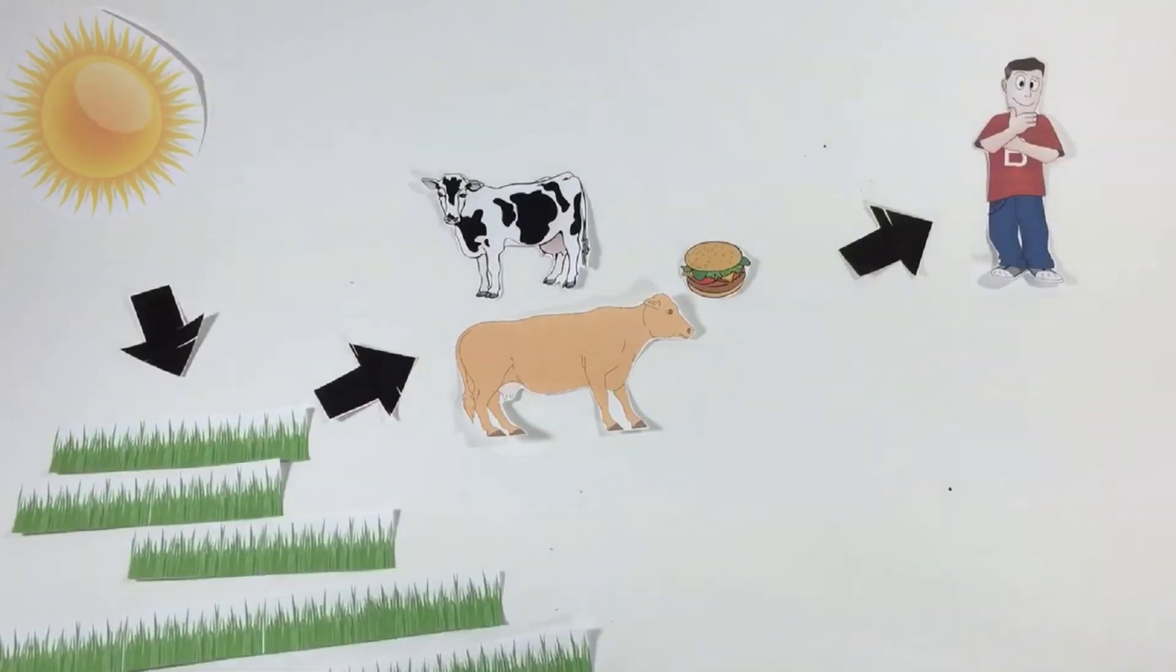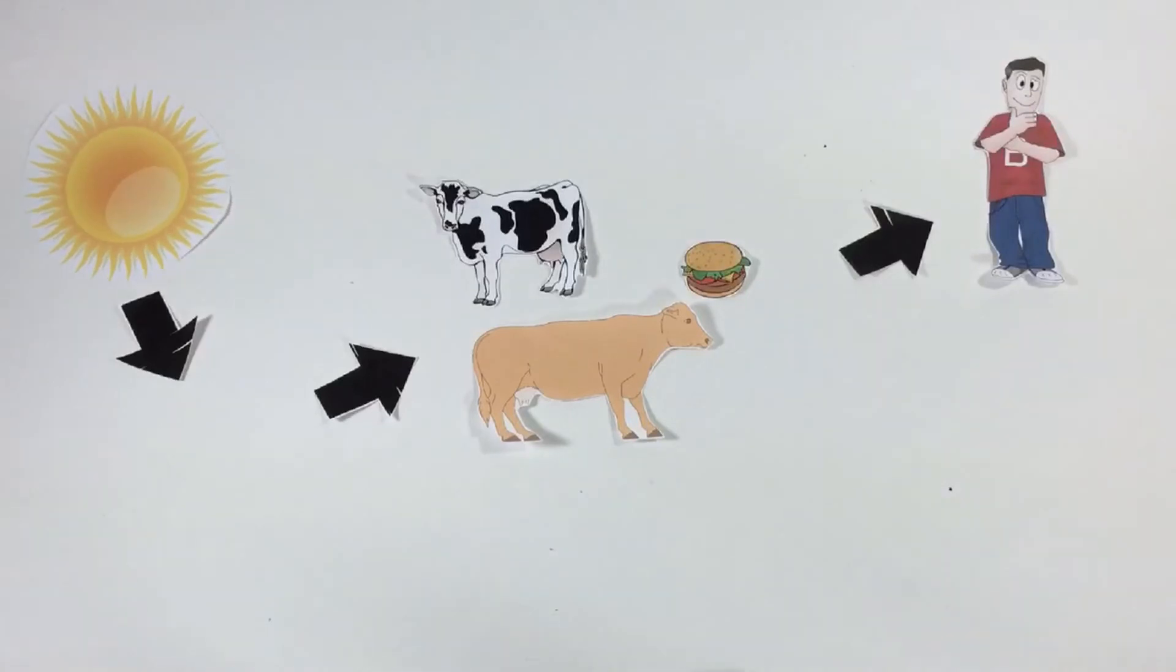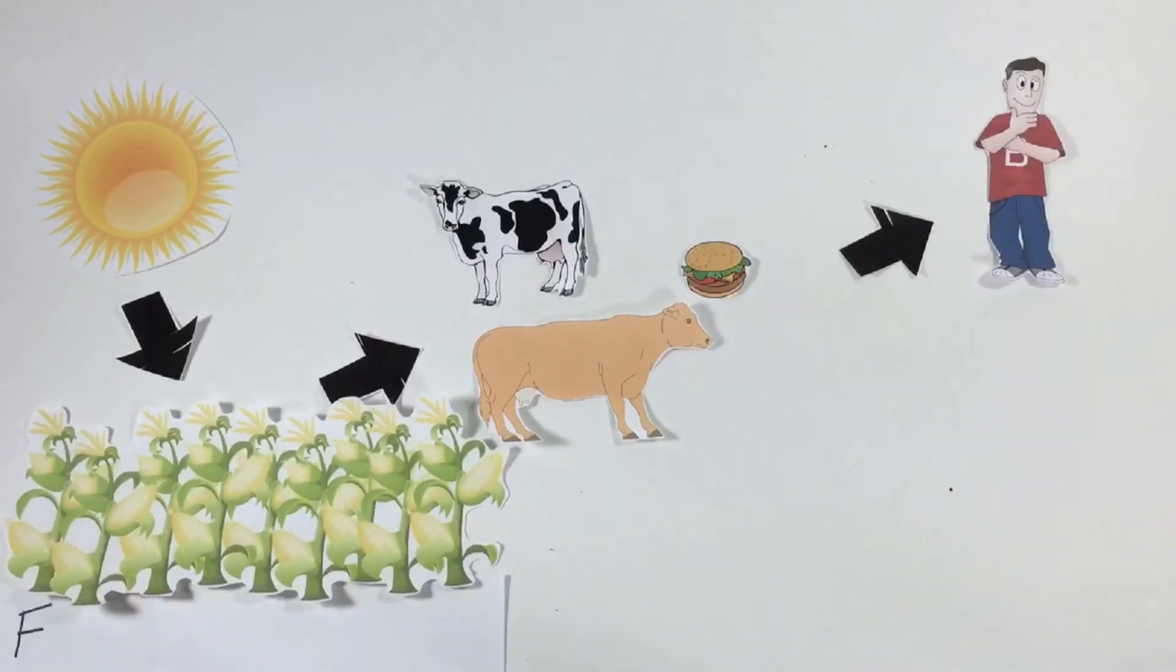Now, to feed 10 billion animals, you need a lot of grass, or in the case of the cow, a lot of corn. In fact, most of what we grow in this country is actually just to feed the animals we eat.